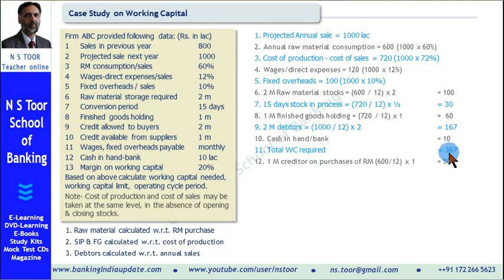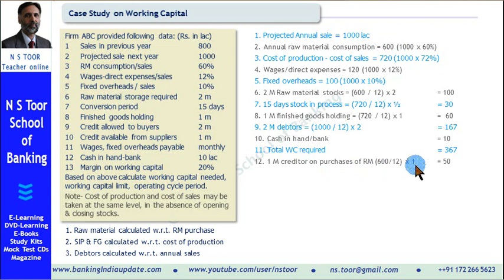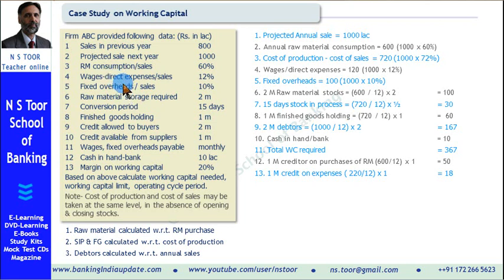Now how to finance this? A part will be financed out of creditors. Credit available from suppliers is 1 month, which is on purchase of raw material. Raw material purchases are 600 for 1 year, so for 1 month it is 50 — hence the amount of creditors is 50. Credit is also available on expenses: wages paid after 1 month, and fixed overheads and administrative/selling expenses are also paid on a monthly basis, giving 1 month credit here as well. Total such expenses are 120 plus 100 = 220 for 1 year, so for 1 month it will be roughly 18.